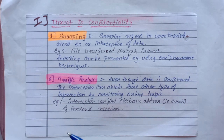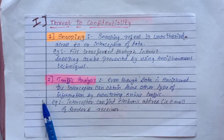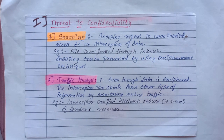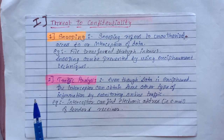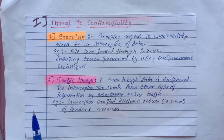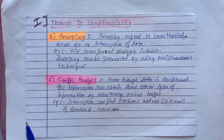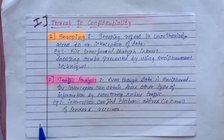The second threat to confidentiality is traffic analysis. Even though we encipher the data, an interceptor can obtain another type of information by monitoring the online traffic between sender and receiver. The interceptor can find the electronic addresses of the sender and receiver, and collect pairs of requests and responses so as to guess the nature of the transaction.